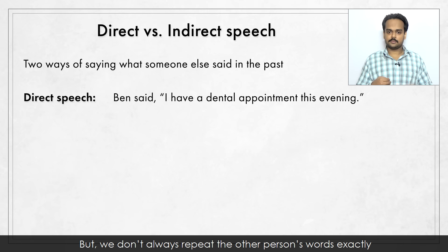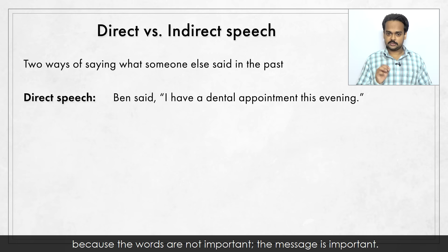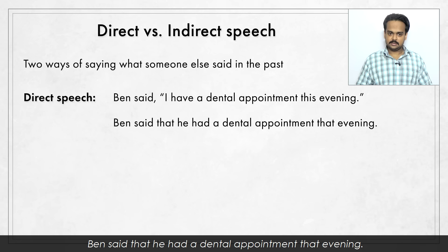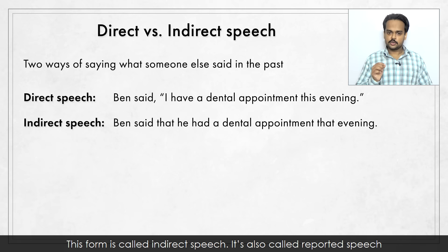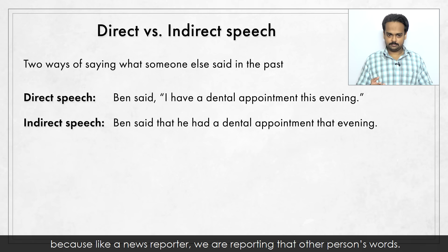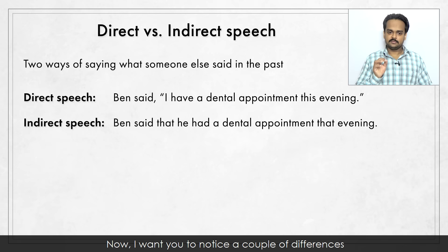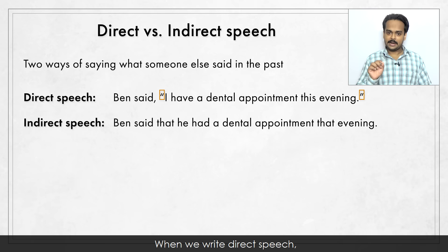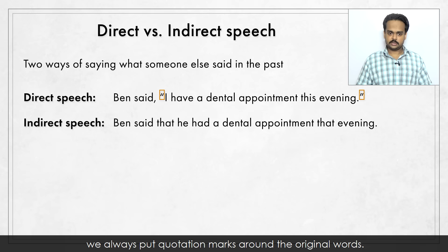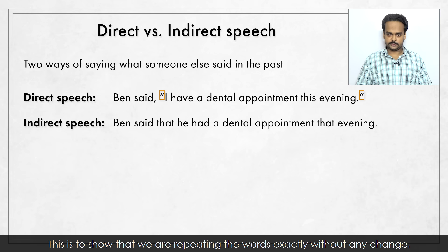But we don't always repeat the other person's words exactly, because the words are not important – the message is important. So we can say it like this instead: Ben said that he had a dental appointment that evening. This form is called indirect speech. It's also called reported speech, because like a news reporter, we are reporting that other person's words. When we write direct speech, we always put quotation marks around the original words, to show that we are repeating the words exactly without any change. But in indirect speech, we don't use quotation marks.